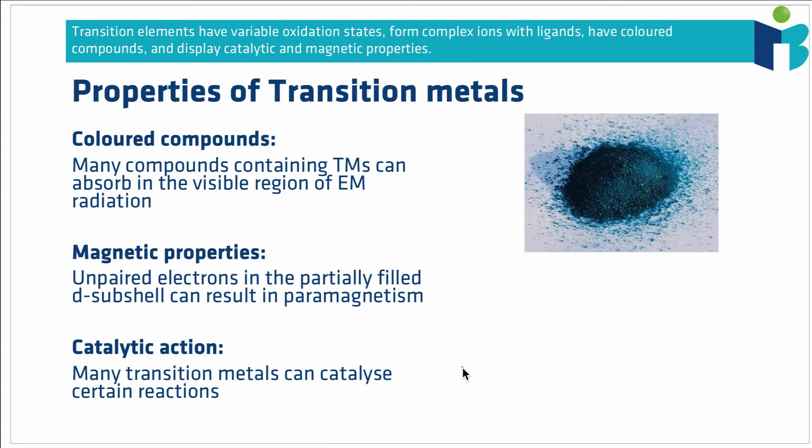So for example, if we took something like the Haber process, that is nitrogen gas and hydrogen gas coming together to form ammonia NH3, we find that this reaction goes faster if it's done in the presence of an iron surface. Iron is able to catalyse this reaction and make it go more quickly and we see that lots of the transition metals are able to do similar things to different reactions.